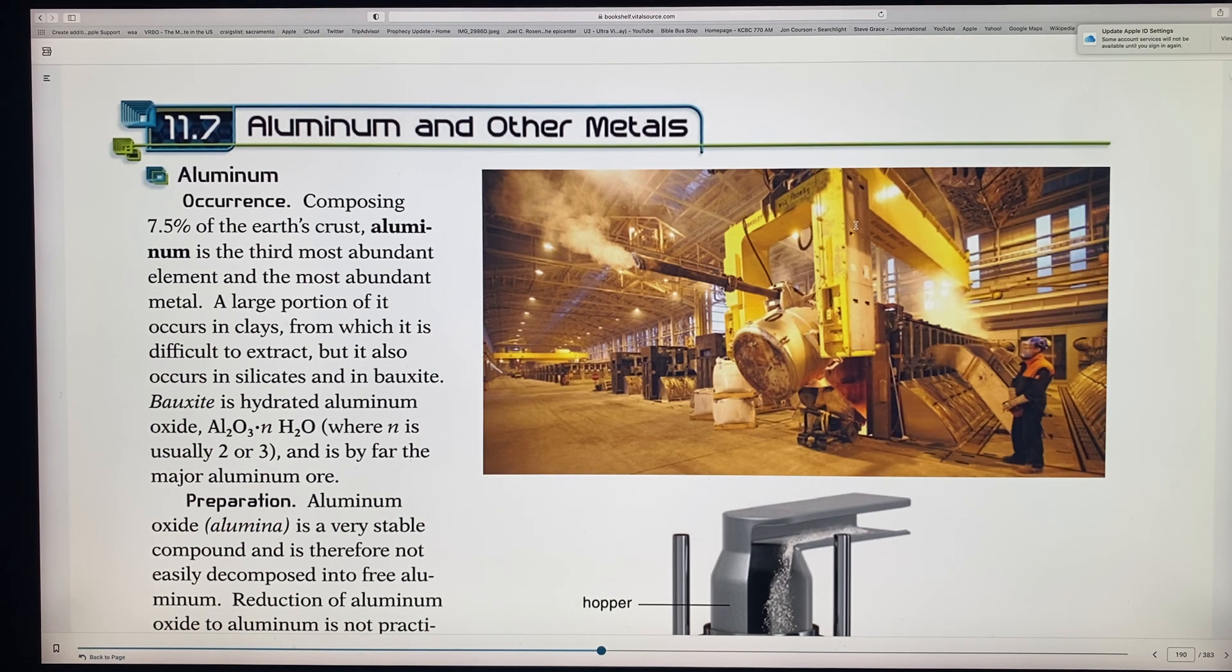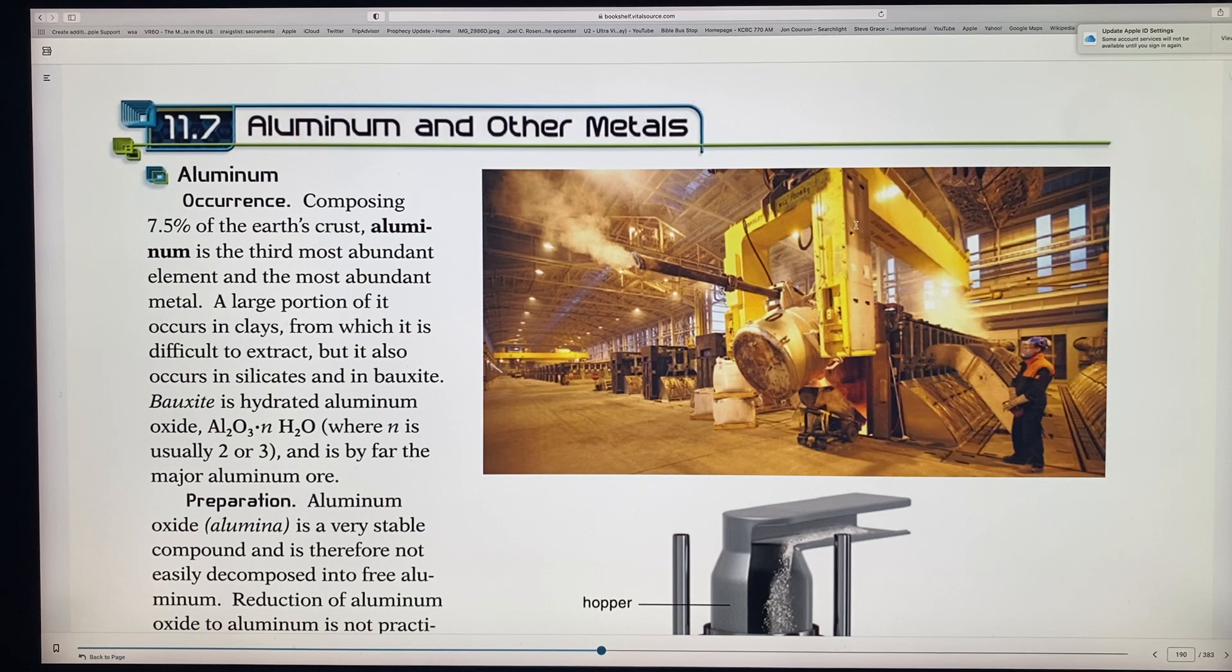A large portion of it occurs in clays. It's very difficult to extract it from the earth, from clay, but it also occurs in silicates and bauxite. Bauxite factories, whenever you hear that, this factory is a bauxite, you think, well, what is bauxite? Well, now you know it's hydrogen aluminum. And here you see basically the symbol for it, for bauxite, is aluminum, Al2O3, times whatever with water. This is what is called bauxite here. And it's by far the most important aluminum ore.